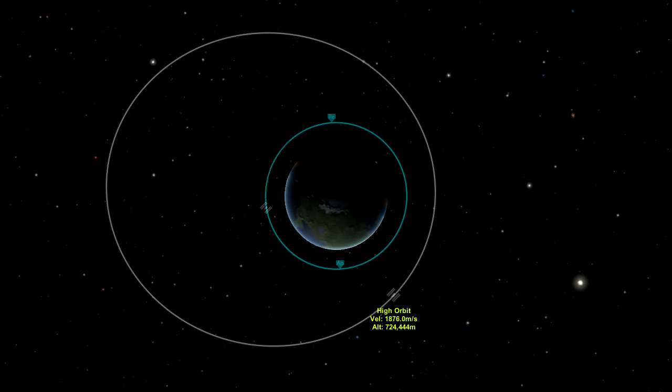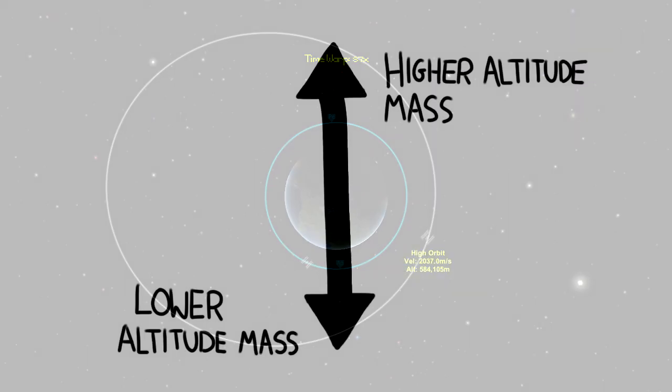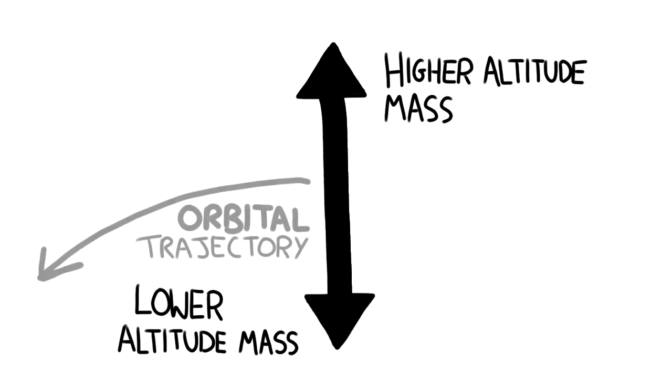I hope you're still with me. This is a little bit difficult to explain. Right, with that in mind, let's go back to our spacecraft with the mass spread out. Some of this mass is at a higher altitude than the other mass, but they all share the same velocity.